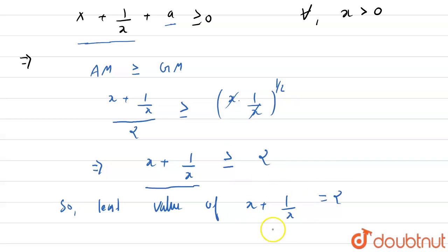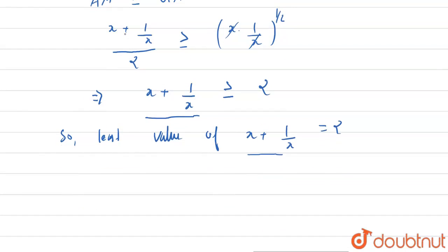So least value of x plus 1 upon x equals 2. So if we put the value of x plus 1 upon x in this equation,